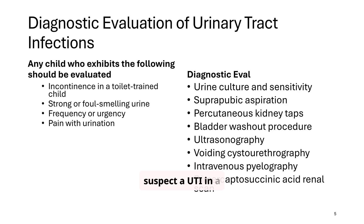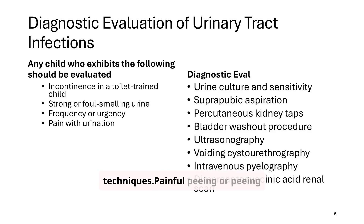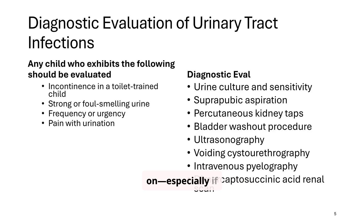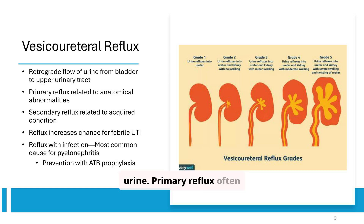When should you suspect a UTI in a child? Look for signs like incontinence in toilet-trained children, strong-smelling urine, or frequent and painful urination. Diagnostic tools range from urine cultures to advanced imaging techniques. Painful peeing or peeing more often is classic. But kids can also just be cranky, not eating, or have unexplained fever. We use urine cultures and sometimes imaging to figure out what's going on, especially if it's a repeat infection.